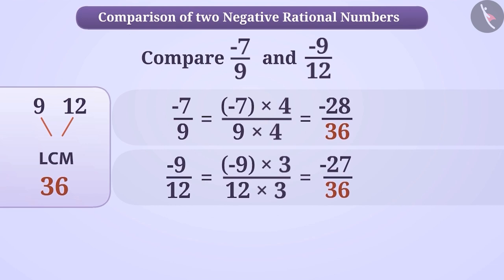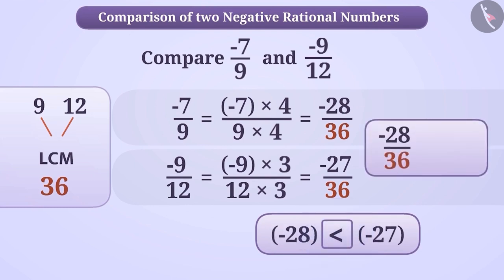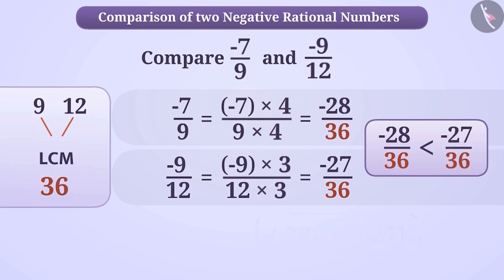After making the denominators equal, one numerator is -28 and the other is -27. Both are integers. When we compare two negative integers, the integer whose value is greater without a negative sign becomes smaller with the sign. That means, -28 is lesser than -27, or -28/36 is lesser than -27/36, or -7/9 is lesser than -9/12.